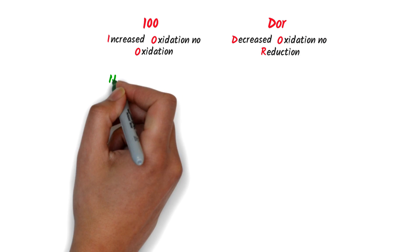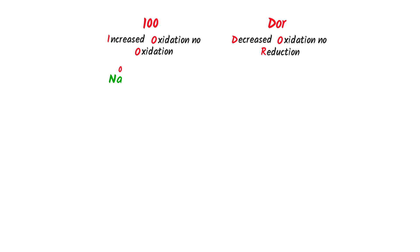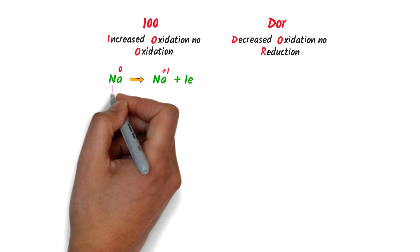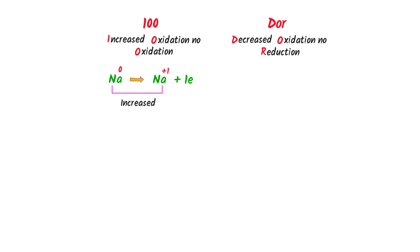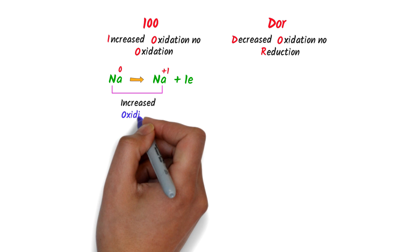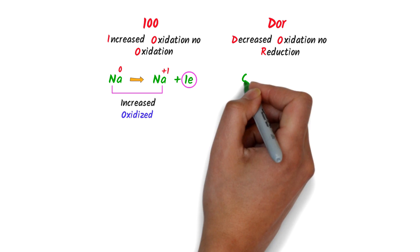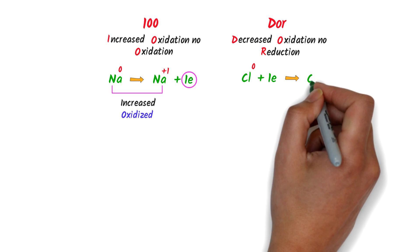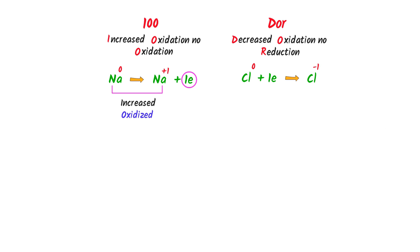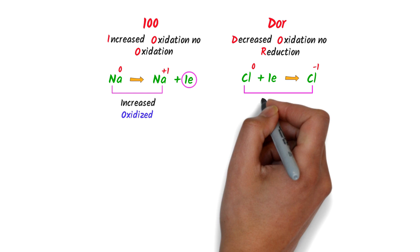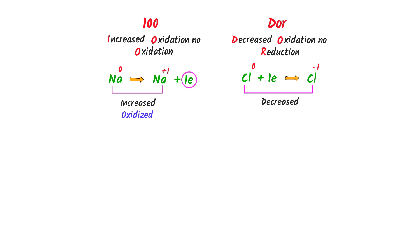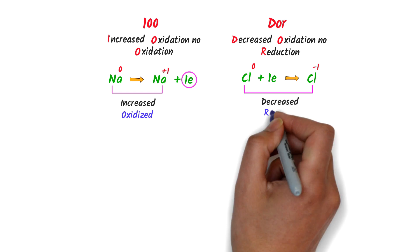For example, consider a sodium atom. Sodium loses one electron to become a positive ion. We can see that the oxidation number of sodium increased from zero to positive one, so we say that sodium is oxidized. This lost electron is gained by the chlorine atom to become a negative ion. We can see that the oxidation state of chlorine decreased from zero to negative one, so it is reduced.